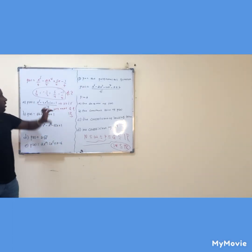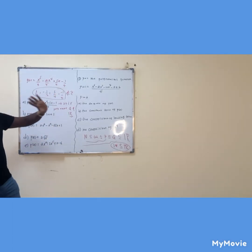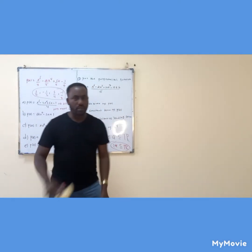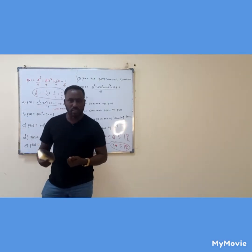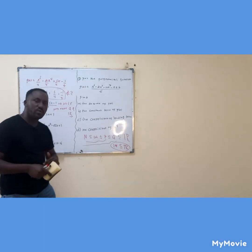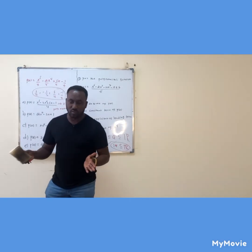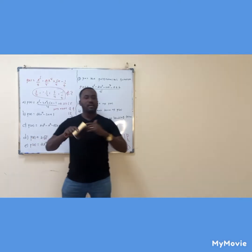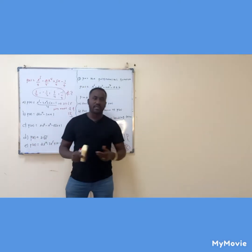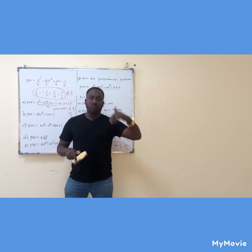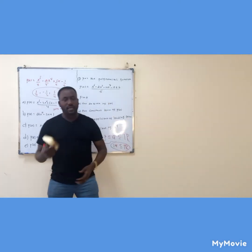All the numbers are rational, so this is a polynomial over the set of rationals. So this implies that this is a polynomial over rational and also real numbers — because all the coefficients of the polynomial belong to both rational and real numbers. You have to describe this carefully.